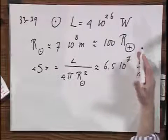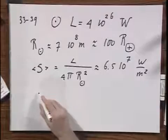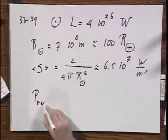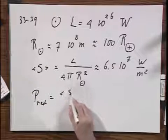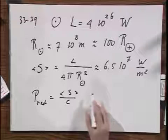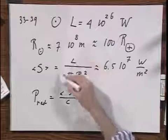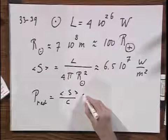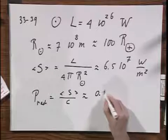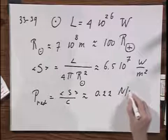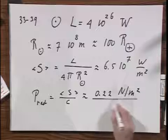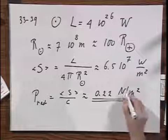Now, if I were to hold a surface there at the surface of the sun, no pun implied, and I were to absorb all the radiation from the sun — full absorption, no reflection — then the radiation pressure would be S divided by C. You might as well take this quantity divided by C; it's the same. That is about 0.22 newtons per square meter — a very, very small pressure.